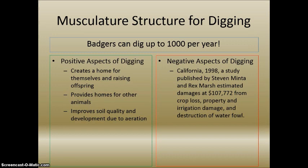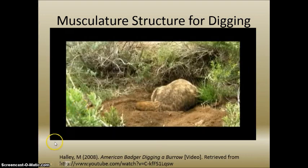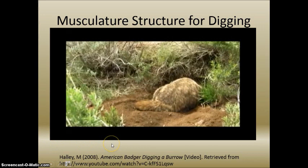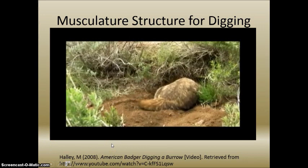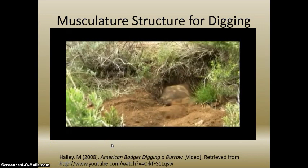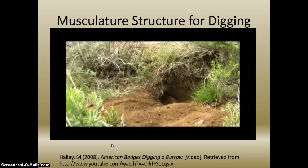Negatively, a 1998 California study published by Steven Linton and Rex Marsh estimated damages in Northern California up to $107,772 from crop loss, property and irrigation damage, and destruction of waterfowl. Here you can watch the badger dig its hole — notice that it scratches with its front forelimbs and then uses its back limbs to push the dirt outside of the hole.